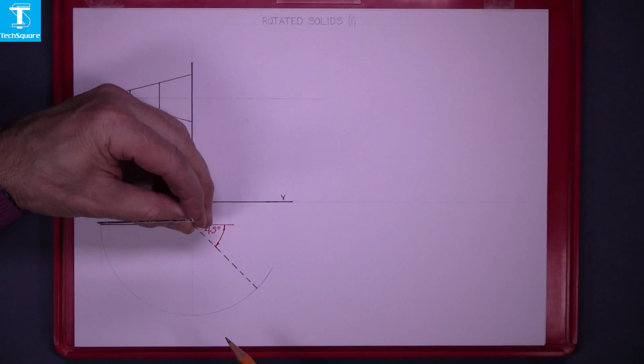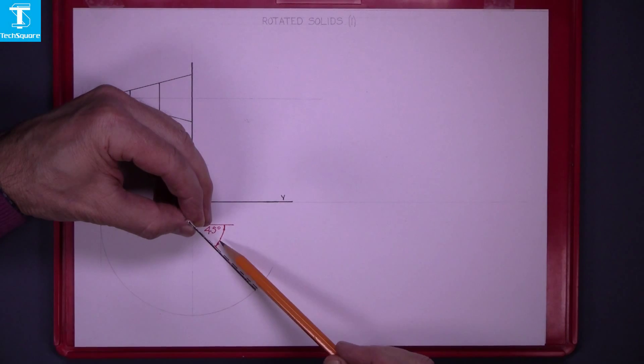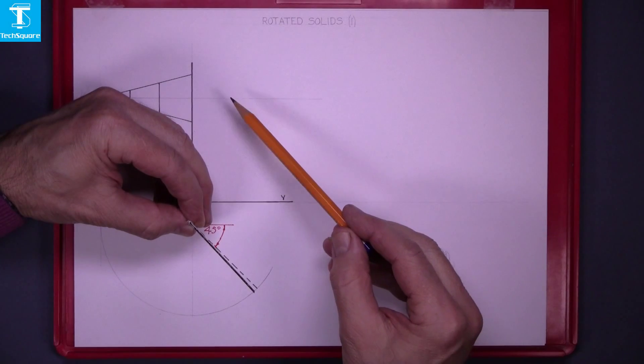We are asked to rotate it into a 45 degree position. As it rotates, the endpoint of the flag follows that circle. When it gets to where that dotted line position is, that's where we want it. We are asked to draw the elevation of it then.